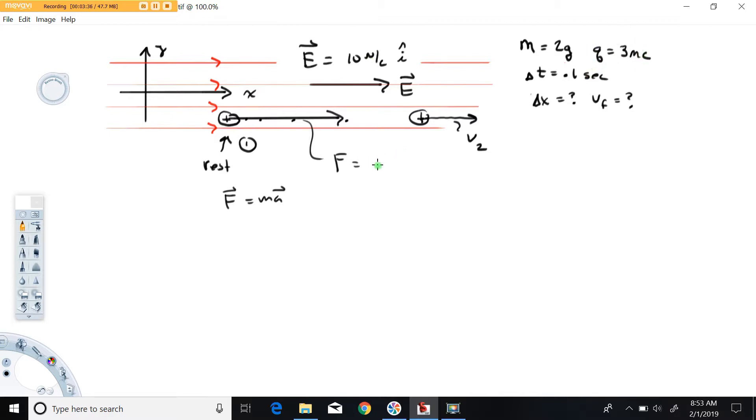and we can calculate that easy enough from this field strength. That force is going to equal the charge that the object carries, 0.003 coulombs—that's three millicoulombs—times the field strength 10 newtons per coulomb, and we're going to get 0.03 newtons out of that.